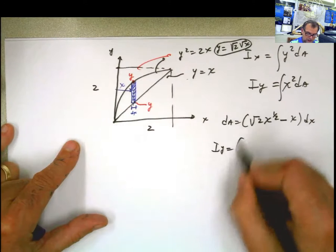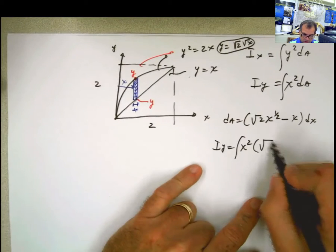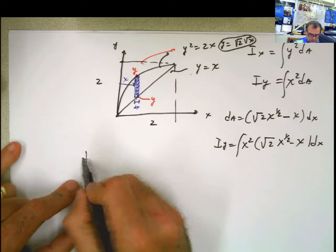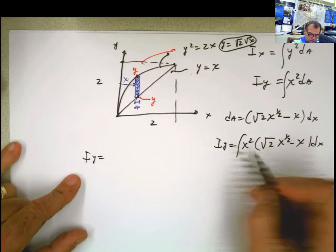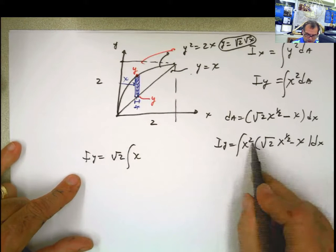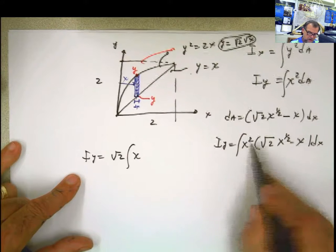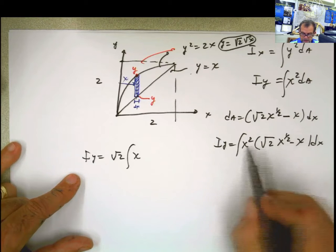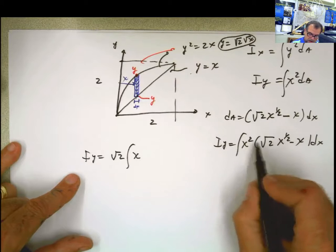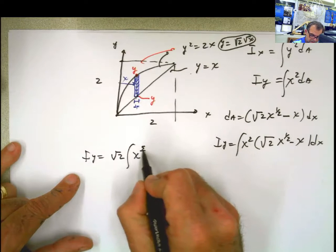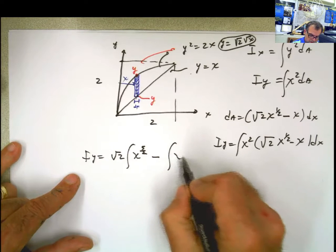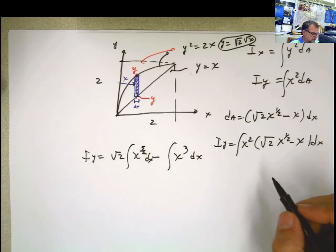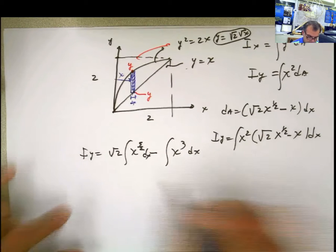I_y equals the integral of x squared multiplied by this: square root of 2 times (x to the 1/2 minus x) dx. Square root of 2 is constant and goes outside. x squared multiplied by x to the 1/2 gives x to the 5/2, using the rule of adding exponents with the same base. So we have square root of 2 times the integral of (x to the 5/2 minus x cubed) dx.